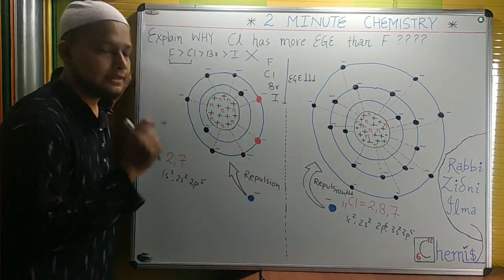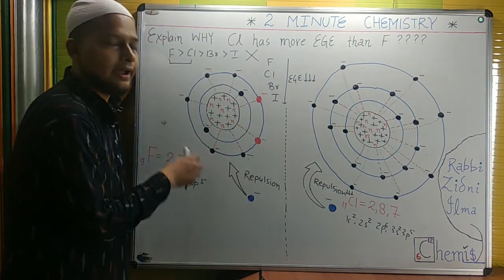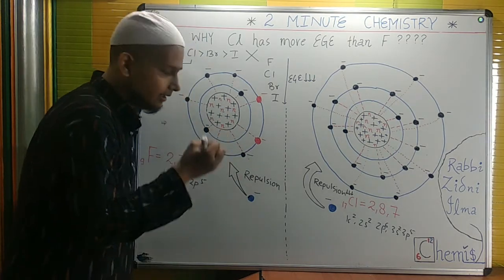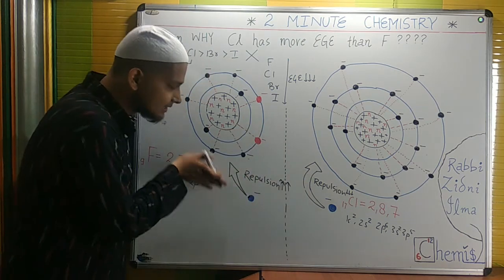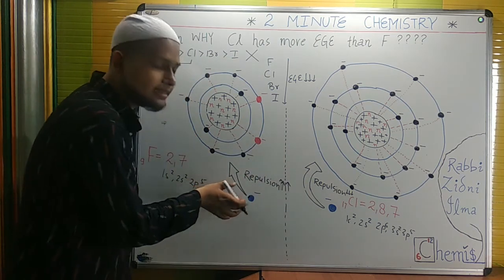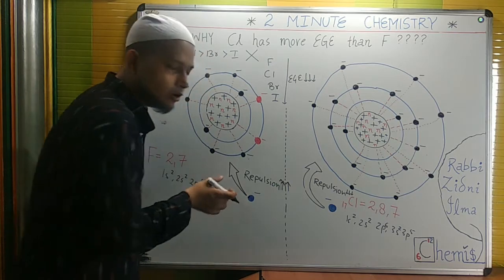However, if you look at fluorine, the size is small and electrons are compactly filled, and hence repulsion is more. So in this case, with more repulsion, the electron is resisted. The addition is not that easy.